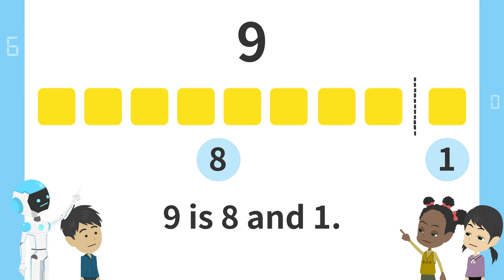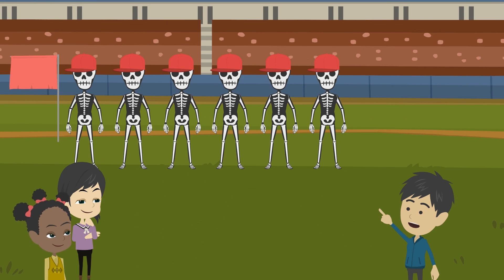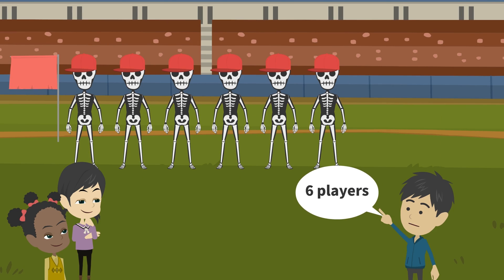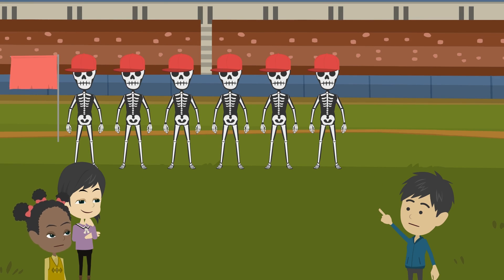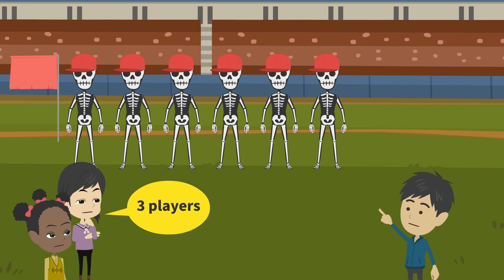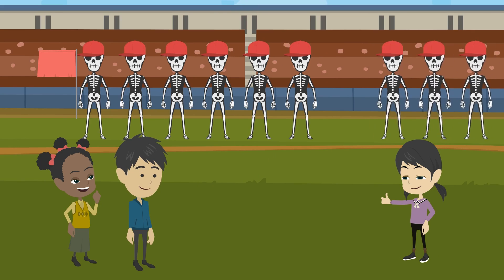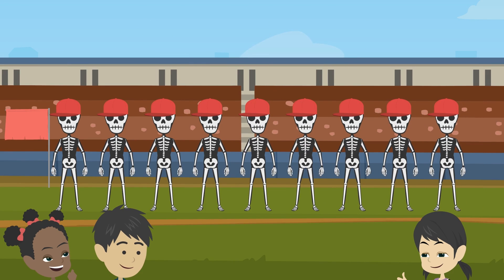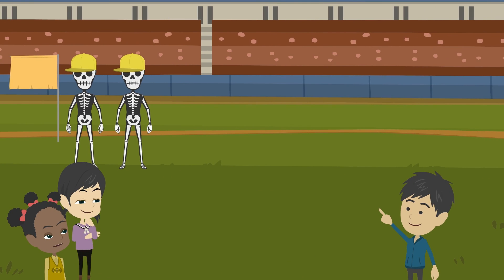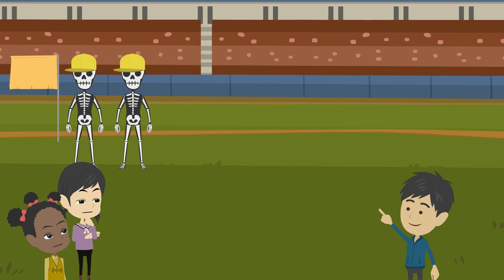You're perfect. The red team has six players now. So, to make nine, we need three more players. The yellow team has two players now. So, to make nine, we need seven more players.